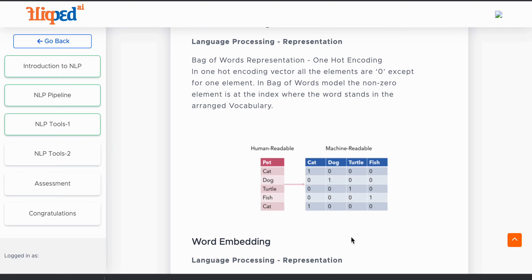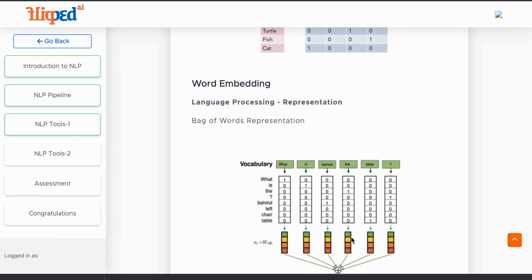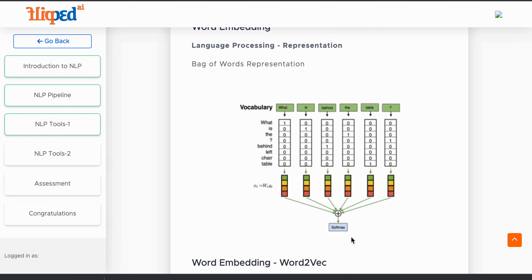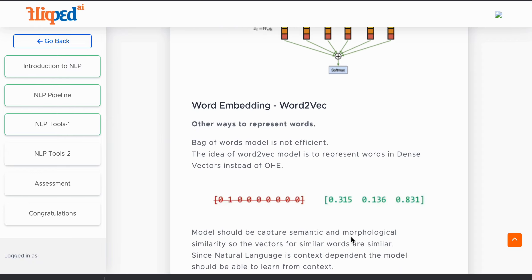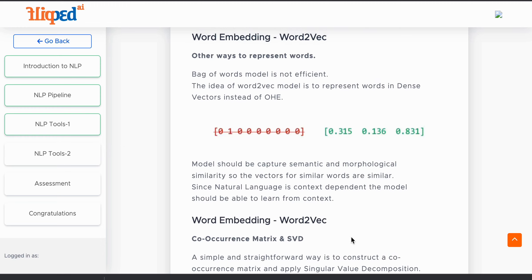This is called one-hot encoding. Using the one-hot encoding, the bag of words representation is explained here in vector size N format. Now we will see about Word2Vec.